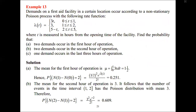We move straight away to Example 13. Demand on the first aid facility in a certain location occurs according to a non-stationary Poisson process with the following rate function. Lambda is a function of T, not a constant, where T is measured in hours from the opening time of the facility. Find the probability that two demands occur in the first hour of operation, the probability that two demands occur in the second hour, and the probability that one demand occurs in the last three hours of operation.